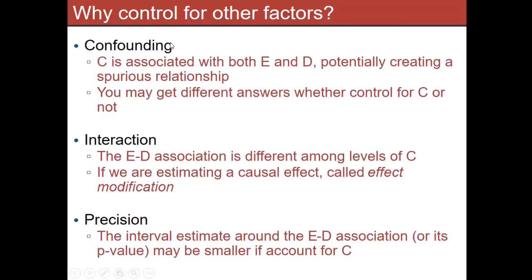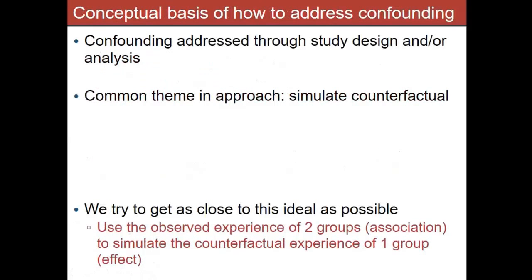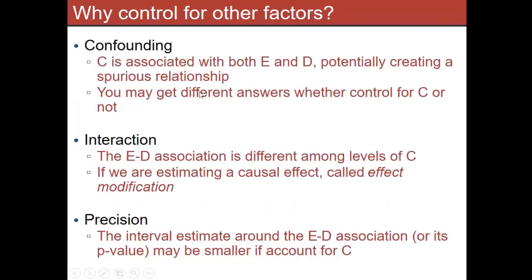We're going to talk about confounding, interaction, and precision. Confounding is when you have a factor that's associated with both your exposure and your disease, and that essentially messes up the relationship you observe between exposure and disease. We might get different answers depending on whether we control for the confounder or not. This is all EPI 530 and 534 stuff — this thing is associated with exposure and disease, it distorts the answer, and that's fundamentally different than interaction or effect modification.